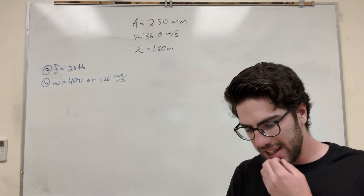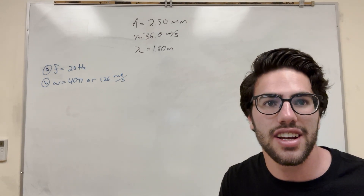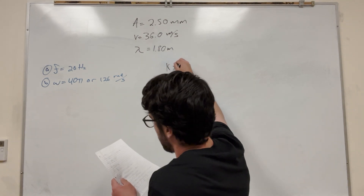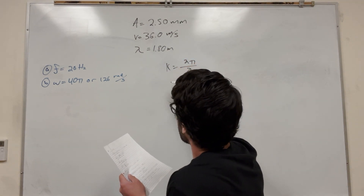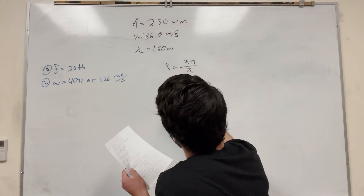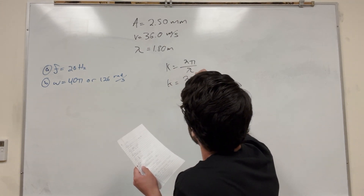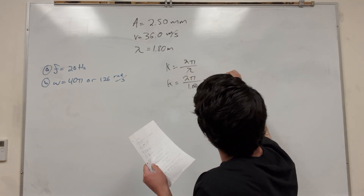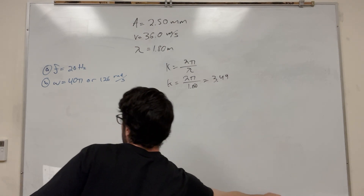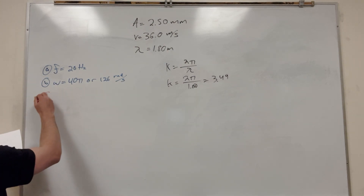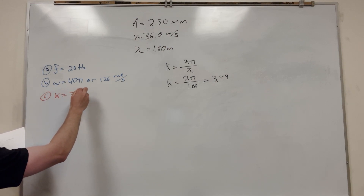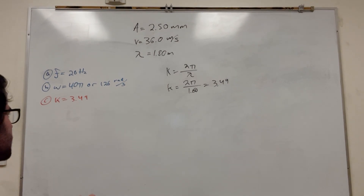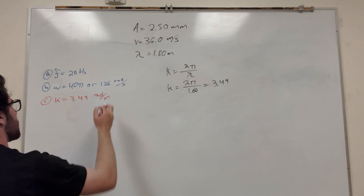The wave number is what I'm looking for here. Wave number K is equal to 2π over lambda (wavelength). So λ is 1.80, and this is going to give you about 3.49. The unit on this one is radians per meter.